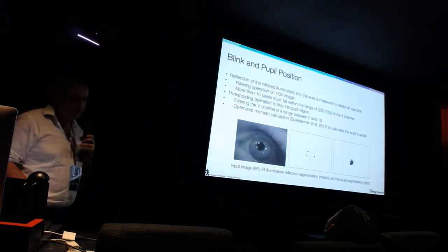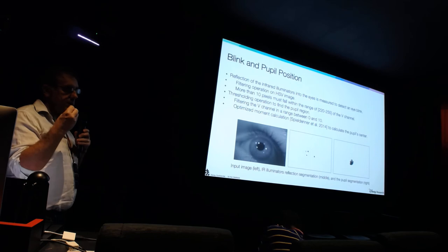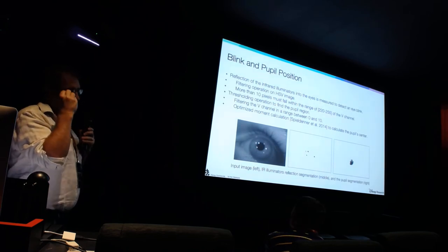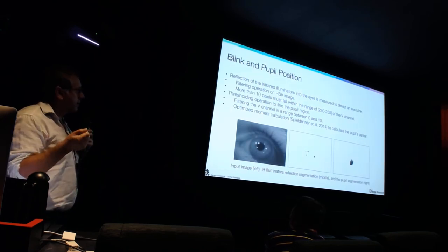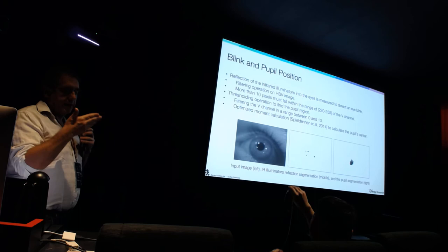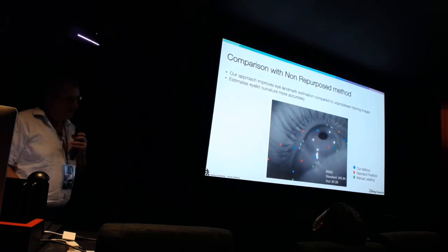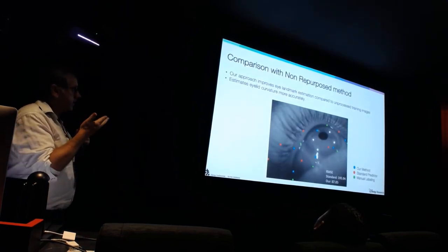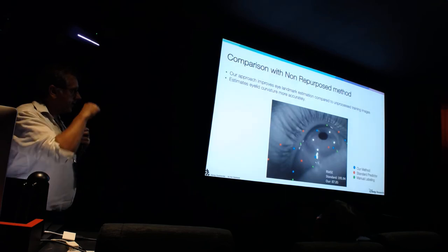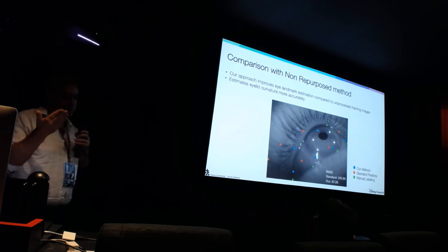In the case of the eyes, we also benefited from additional information like the location of the infrared illuminators. We use those to determine whether your eye is blinking. The gaze threshold of the pupil region also provides additional information to get gaze direction. As a comparison against ground truth, our warp method finds the contour of the eye line more accurately than unrecycled training images.